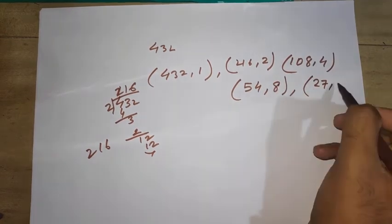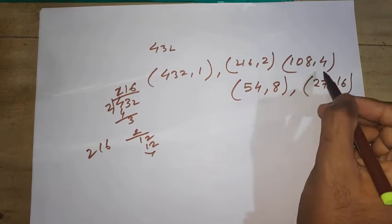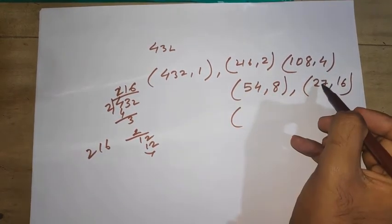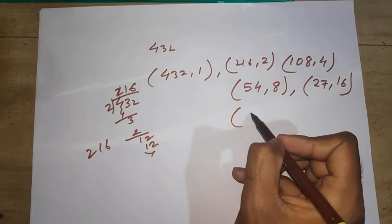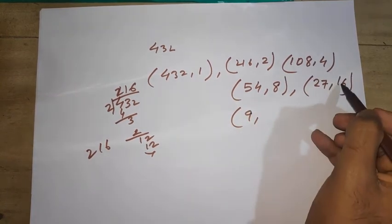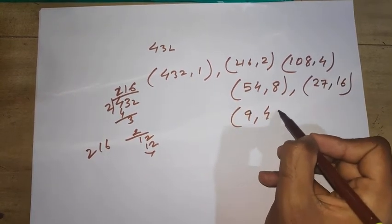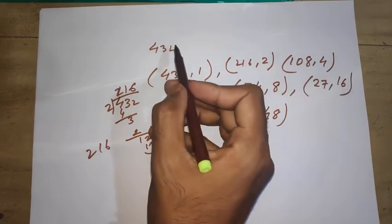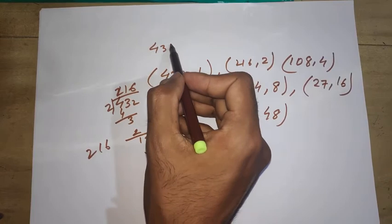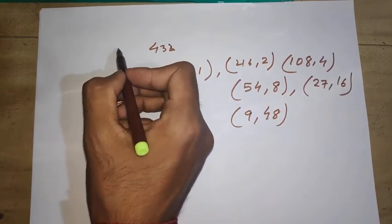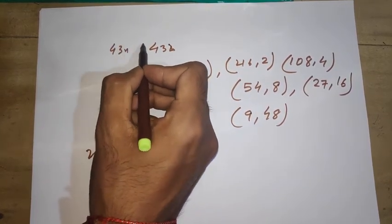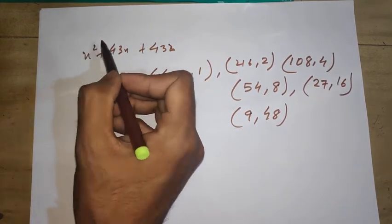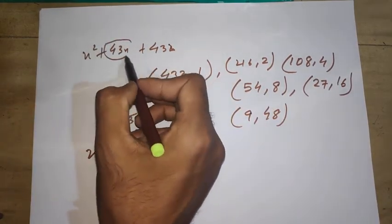You can do it with 3 also. Divide by 3 to get 9, and 16 times 3 is 48. You can keep going on like this, but we'll see - we have in our question x² + 43x + 432.